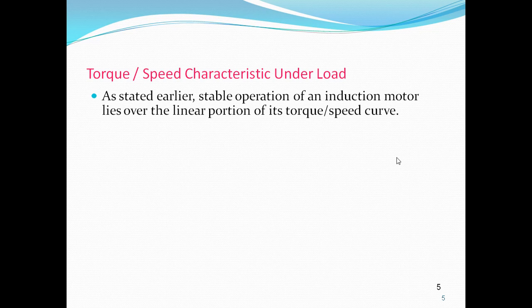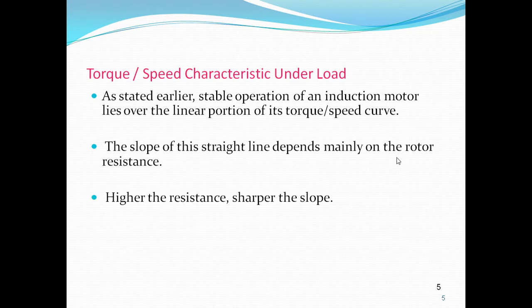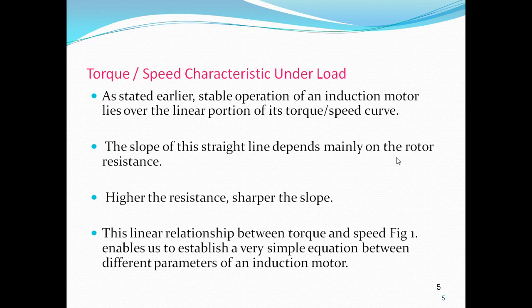When the induction motor is operating at a stable condition, a linear operation of its torque-speed curve is produced. The slope of this straight line depends mainly on the rotor resistance — higher the resistance, sharper the slope. This relation between torque and speed is shown in the figure and enables us to establish a simple equation between different parameters of an induction motor.